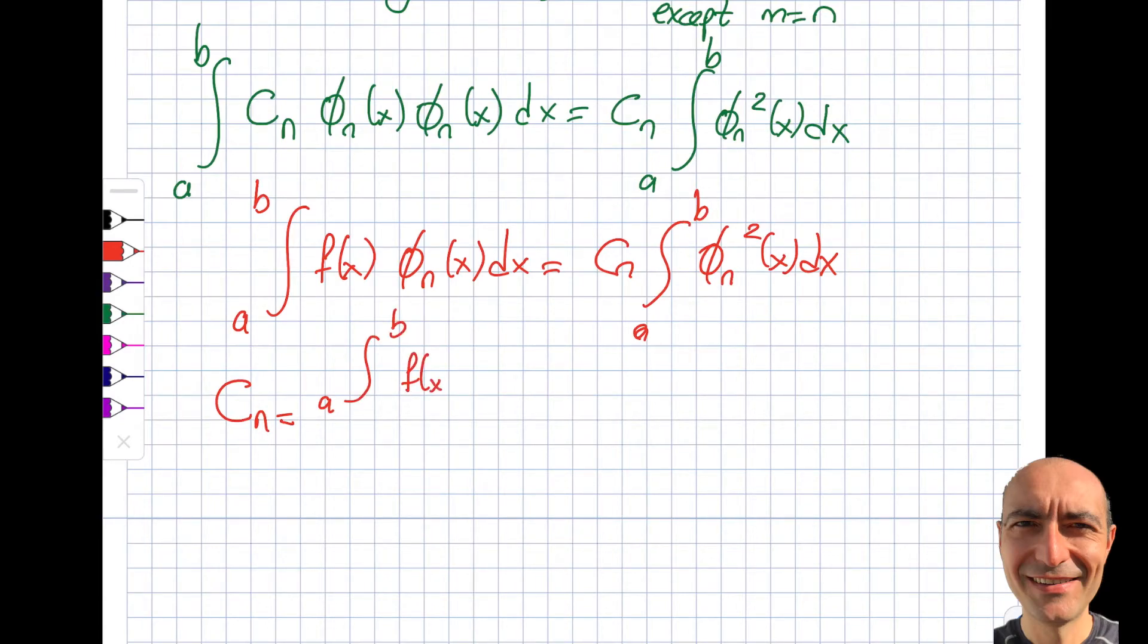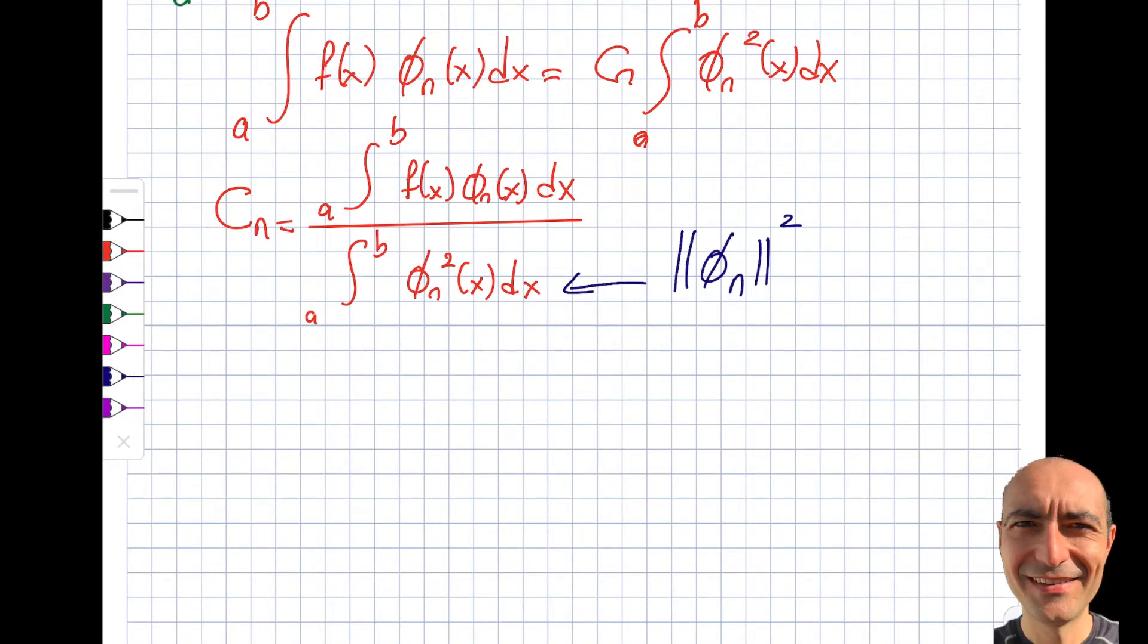And so from here, I will get my cn as integral a to b, f(x)·phi_n(x) dx divided by integral a to b phi_n squared(x) dx. So this will be my cn values. And you may recall this, and I'm sure some of you did recall this. Did you realize we discussed this? This is the square norm, right? Square norm. Why is it the square norm? Because there is no square root. If there was a square root, this is equal to norm or the length. If this was a vector. For a function, it's called the norm of a function. But that is with the square root. So now it's called the square norm. So this is something that we know as well.